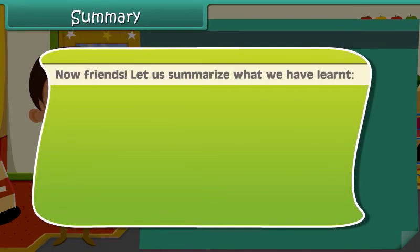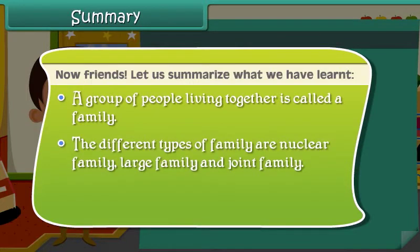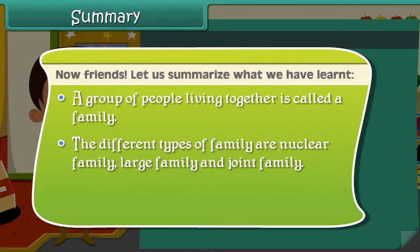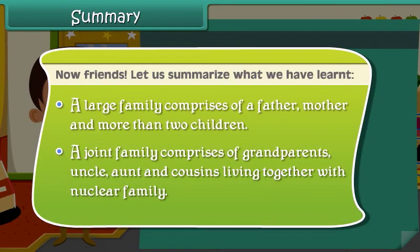Now friends, let us summarize what we have learned. A group of people living together is called a family. The different types of family are nuclear family, large family and joint family. A nuclear family comprises of a father, mother and one or two children. A large family comprises of a father, mother and more than two children. A joint family comprises of grandparents, uncle, aunt and cousins living together with a nuclear family.